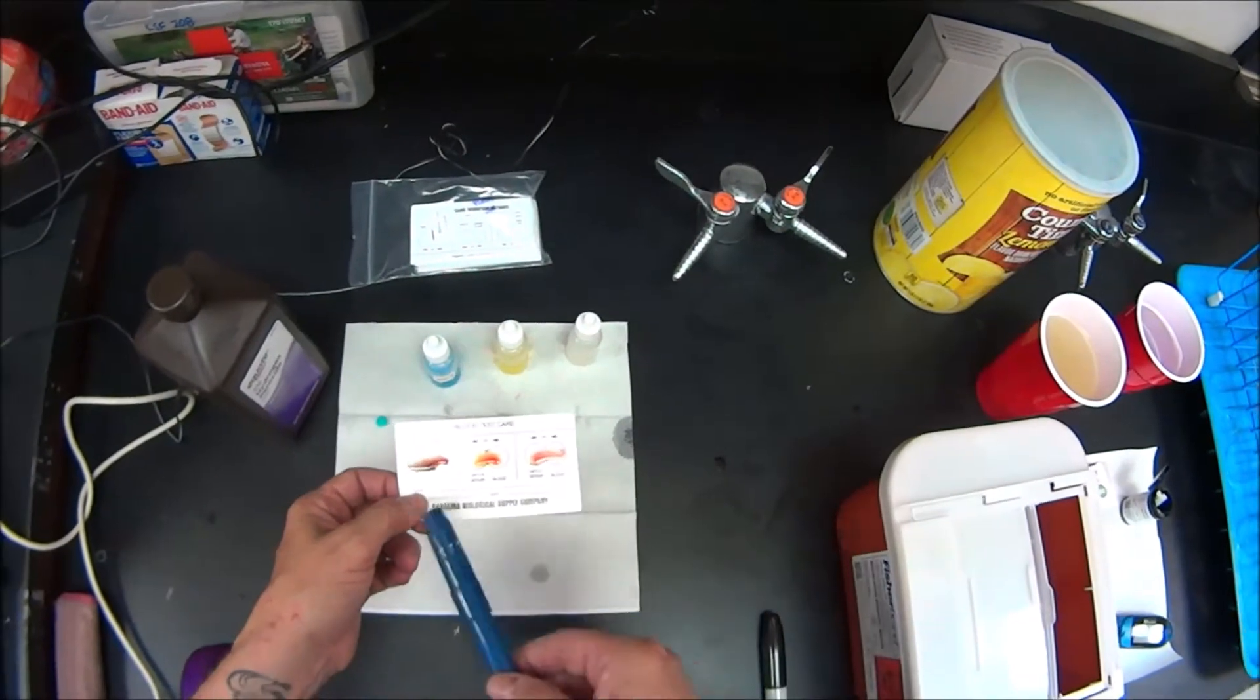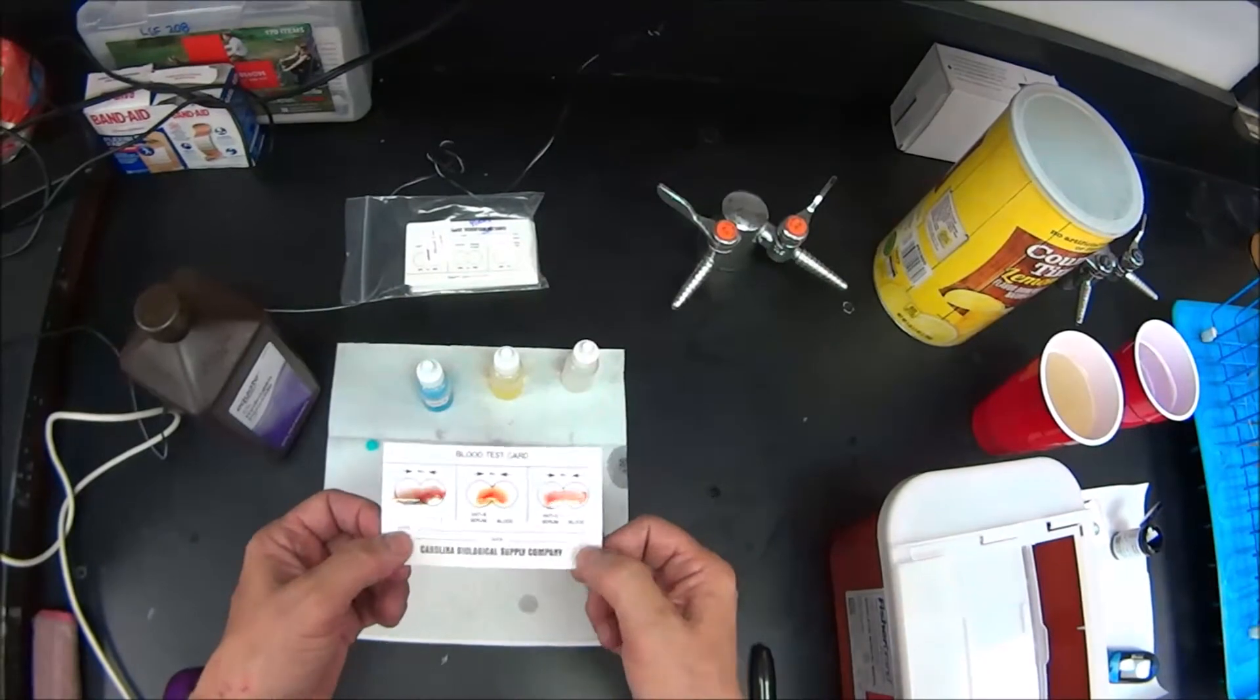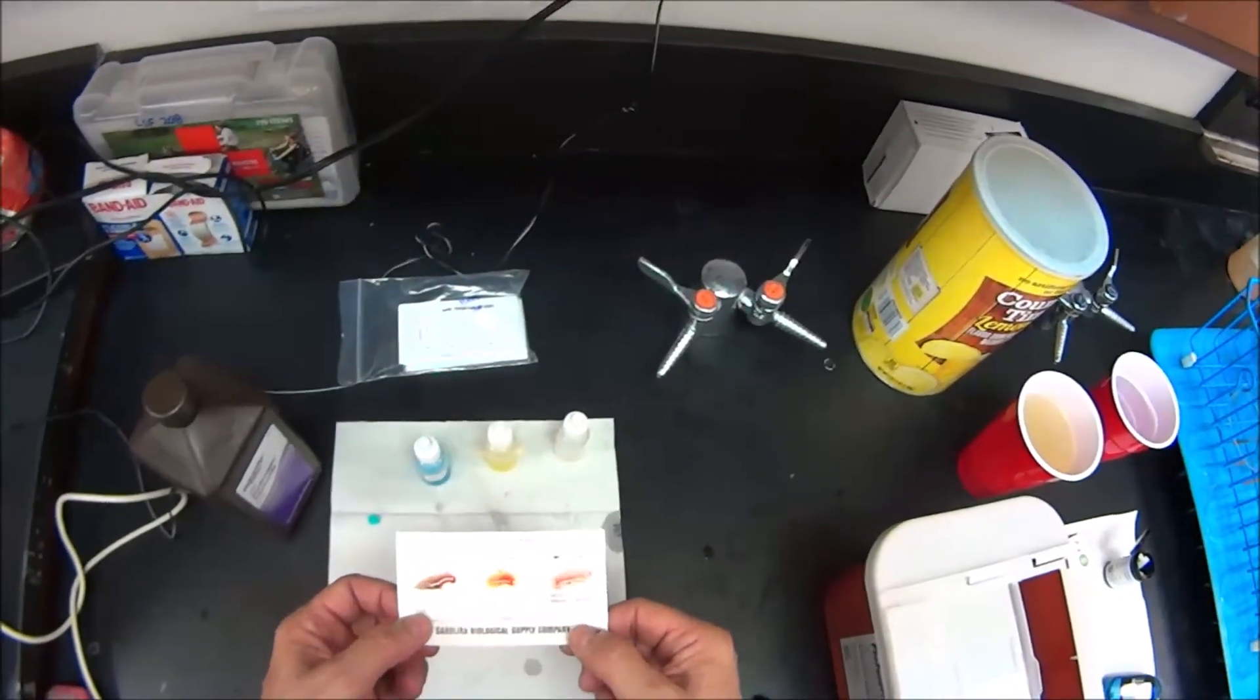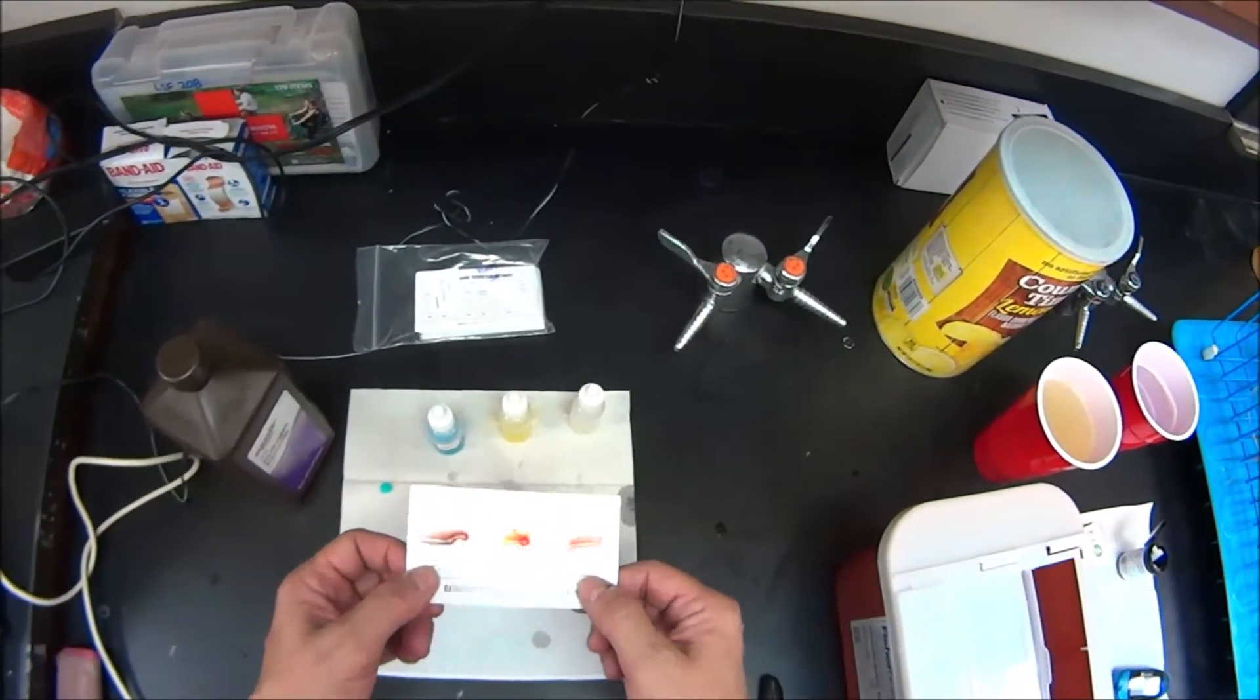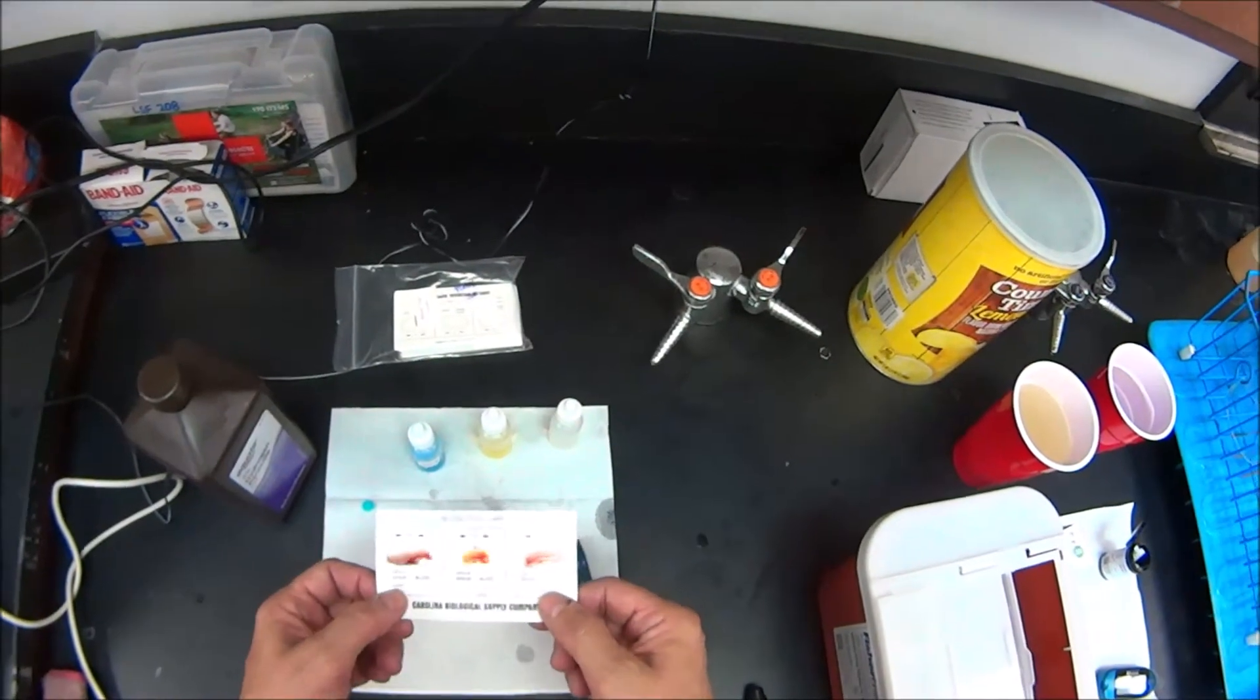Okay. Now in this well and in this well, the A and the B, I do not see any agglutination. So what that means is there was nothing for the A antibodies or the B antibodies to react with. That means I lack A antigens and I lack B antigens.